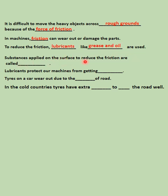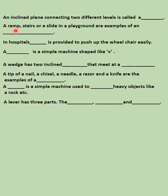Substances applied on surfaces to reduce friction are called lubricants. Lubricants protect our machines from getting damaged. Tires on your car wear out due to friction. In cold countries, tires have grooves to grip the road well. An inclined plane connecting two different levels is called a ramp. A ramp, stairs, or a slide in a playground are examples of an inclined plane. In hospitals, a ramp is provided to push up a wheelchair easily.